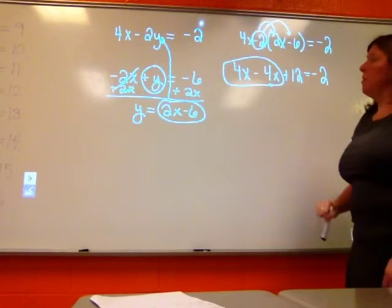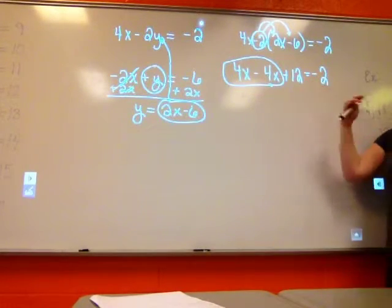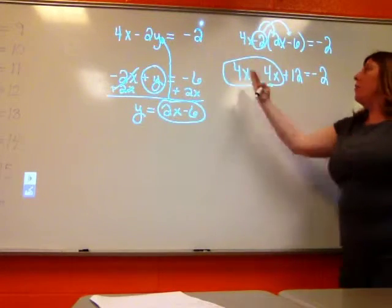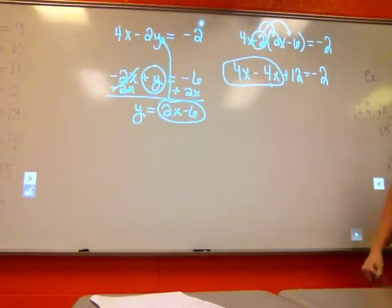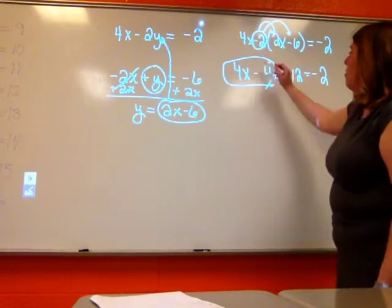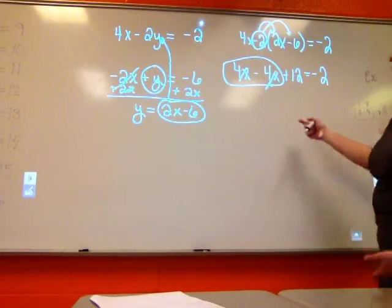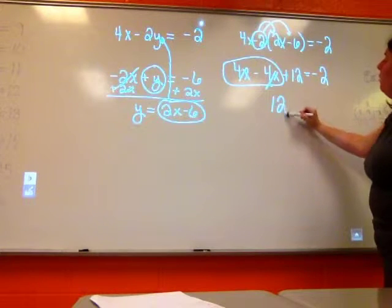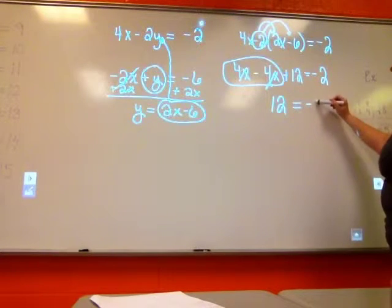Here are my x's. They're on the same side, so I can combine them. 4x minus 4x gets me 0, and that's okay. My x's can cancel out, but let's see what I'm left with. I'm left with 12 equals negative 2.